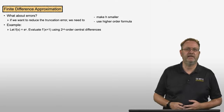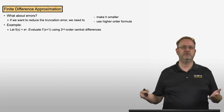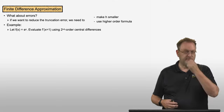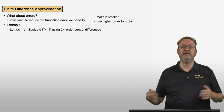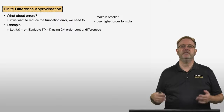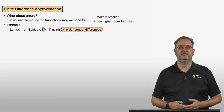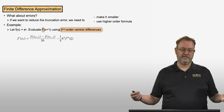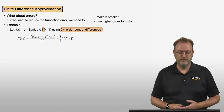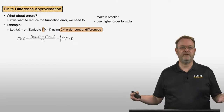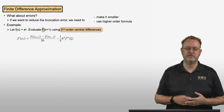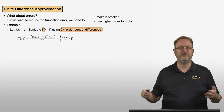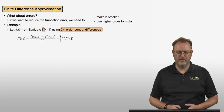Let's do an example. Let's look at f(x) = e^x and evaluate the derivative at x = 1 using second-order central differences. Second-order central differences would be f(x_i+1) minus f(x_i-1) over 2h, minus the truncation error which is (1/3)h² times f triple prime at some unknown location xi.